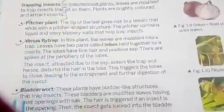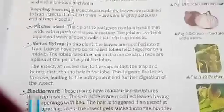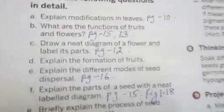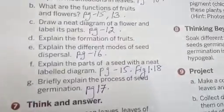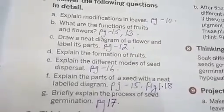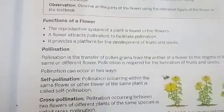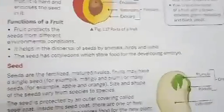Examples of plants for trapping insects: pitcher plant, Venus flytrap, and bladderwort — write only the examples. What are the functions of fruits and flowers? Functions of flowers are on page 13 and functions of fruits are on page 15 — please refer to those pages.